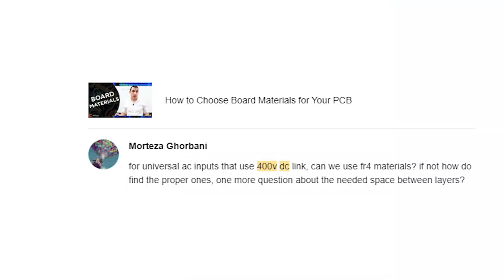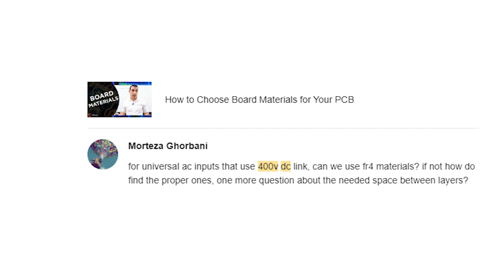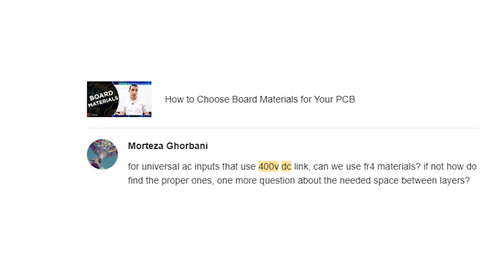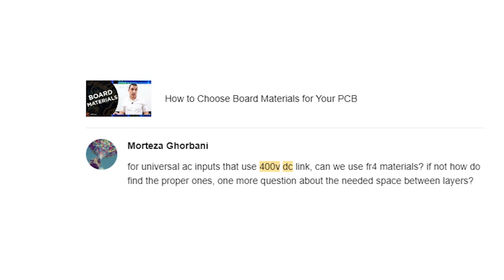So this video came about because we received a good question from a viewer asking about what happens to PCB materials when working at high voltages, specifically at 400 volts DC. Mortiza Gorbani writes, for universal AC inputs that use 400 VDC link, can we use FR4 materials? If not, how to find the proper ones? And one more question about the needed space between layers.